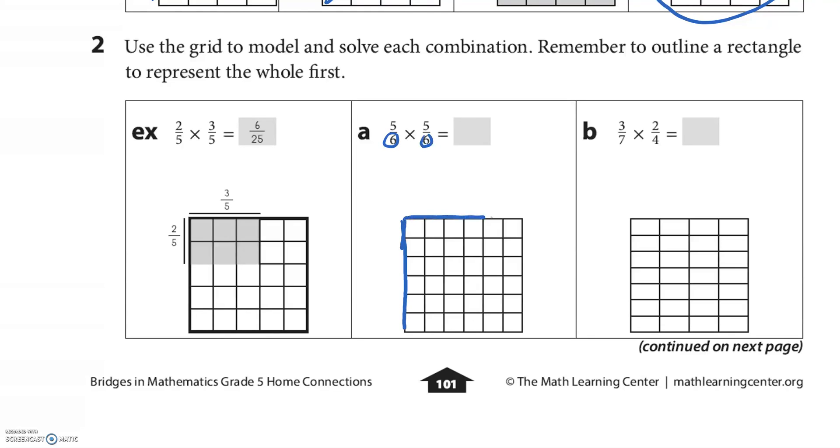And so the whole has 6, and the other side has 6. So 1, 2, 3, 4, 5, 6. They already gave us a square the appropriate size, so there's the whole. And then they want 5/6, so 1, 2, 3, 4, 5—that's 5/6. And then 1, 2, 3, 4, 5—another 5/6.